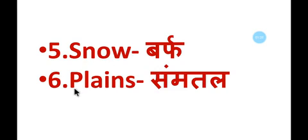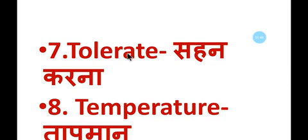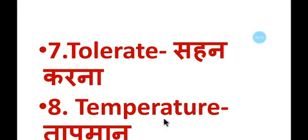Number six: planes — planes means samtal. Number seven: tolerate — t-o-l-e-r-a-t-e — tolerate means sehan karna. Number eight: temperature — t-e-m-p-e-r-a-t-u-r-e — temperature means tapman.